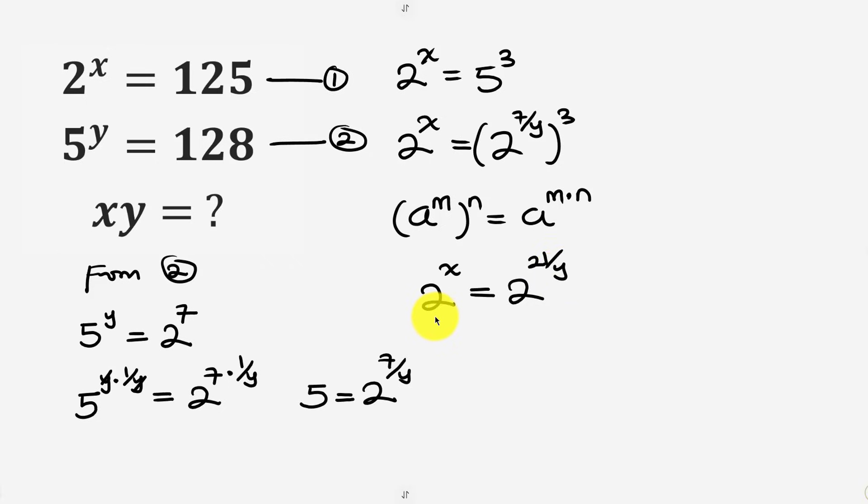Now notice that the base on the left and the base on the right are the same and because of that we can equate their powers. So the power on the left is x and this is equal to the power on the right which is 21 over y.